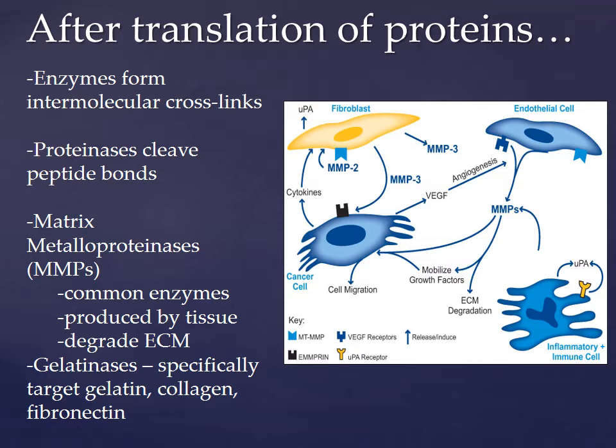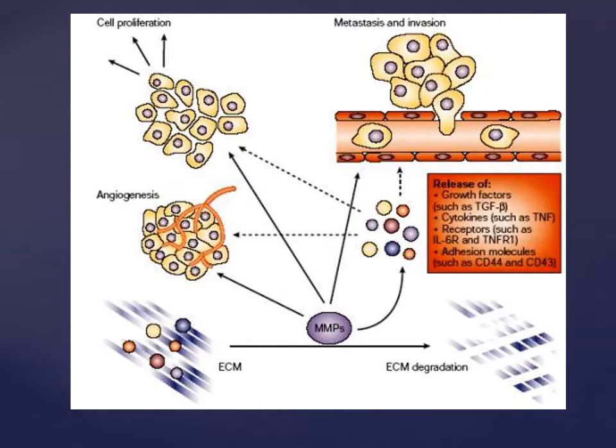The metastasis of cells is what corrupts the ECM. This diagram on the right shows different kinds of MMPs disabling fibroblasts and endothelial cells, and this degradation of cells can lead to cancer. In the top right corner, you can see the clump of cancer cells invading the basal lamina or the ECM. The MMPs make their way into the ECM and tear it to shreds.